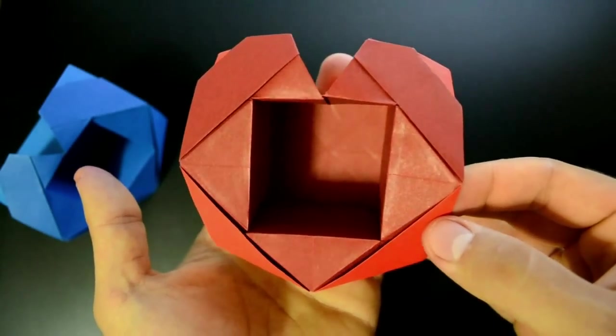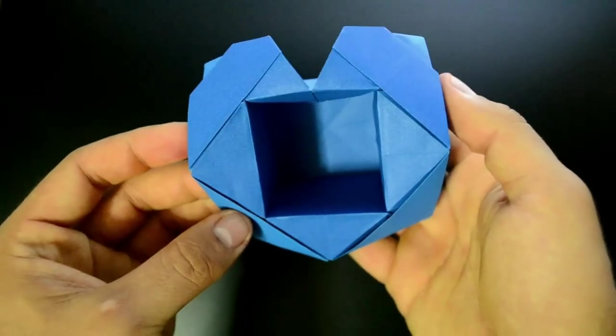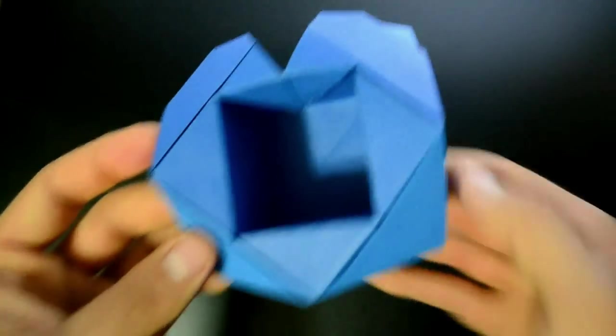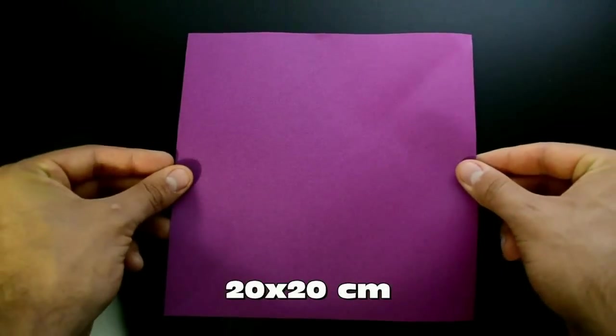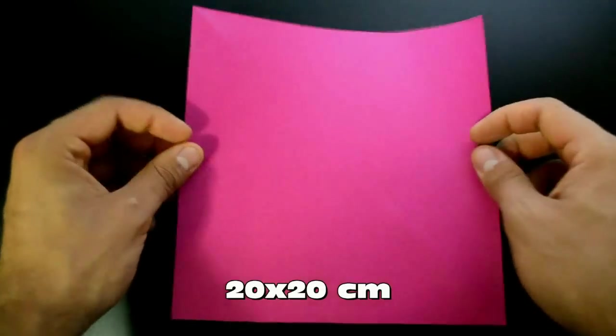To make this model we just need one square of paper, size and color you prefer. In this video I'll use 20x20 cm, 8x8 inches, one color on each side.